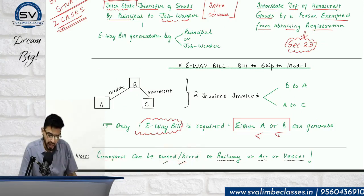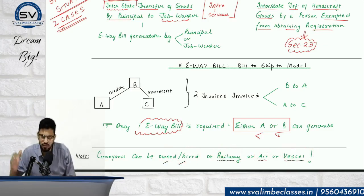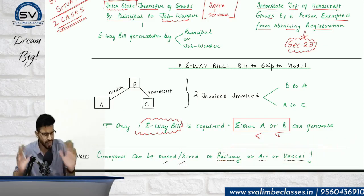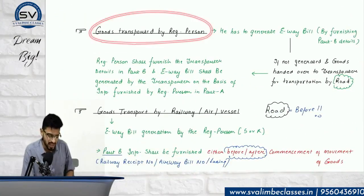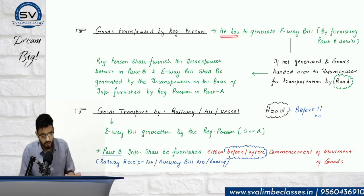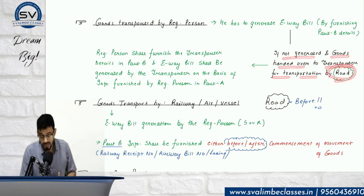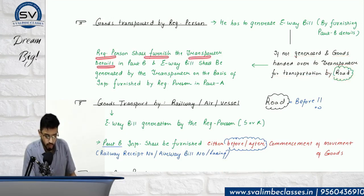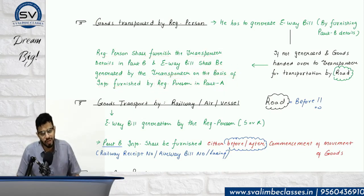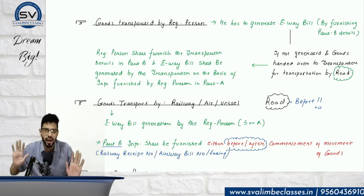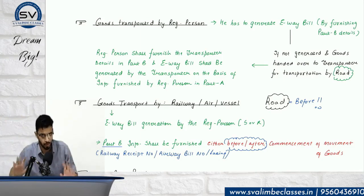Conveyances can be owned or hired — it can be road, railway, air, or vessel. Vehicle number is not required in Part B for cases other than road. If a registered person has not generated Part B and hands goods to a transporter for road transport, they must furnish transporter details in Part B, and the e-way bill shall be generated by the transporter on the basis of information furnished in Part A. Government needs the e-way bill; if the registered person didn't do it, the transporter must generate it.